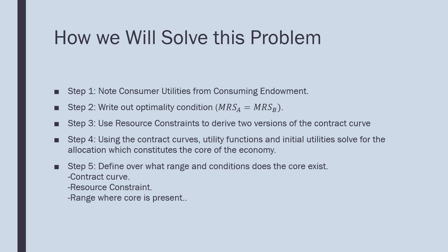Here's how we'll solve this problem. Step one: note consumer utilities from consuming the endowment. Step two: write out optimality conditions. Step three: use resource constraints to derive two versions of the contract curve from consumer A's and consumer B's perspectives. Step four: use the contract curves, utility functions, and initial utilities to solve for the allocation which constitutes the core of the economy. Step five: define over what range and conditions the core exists.